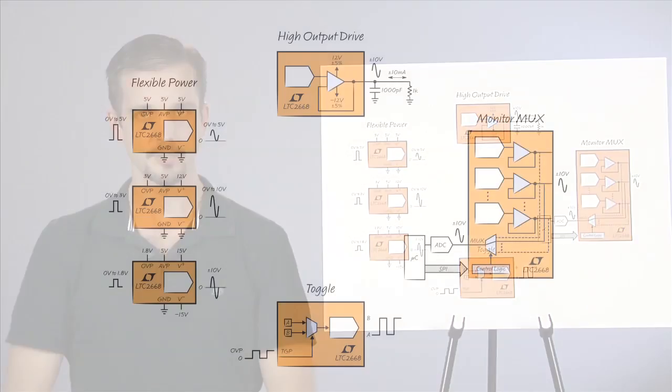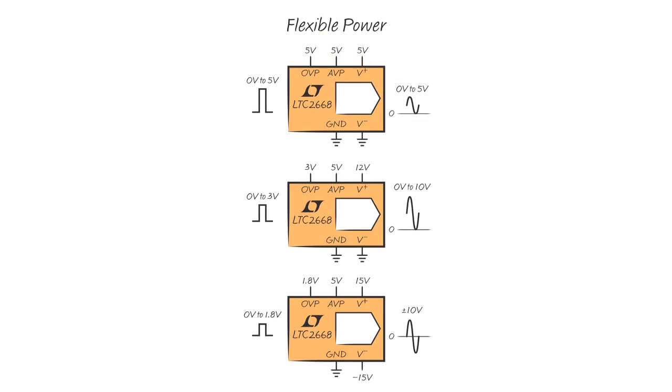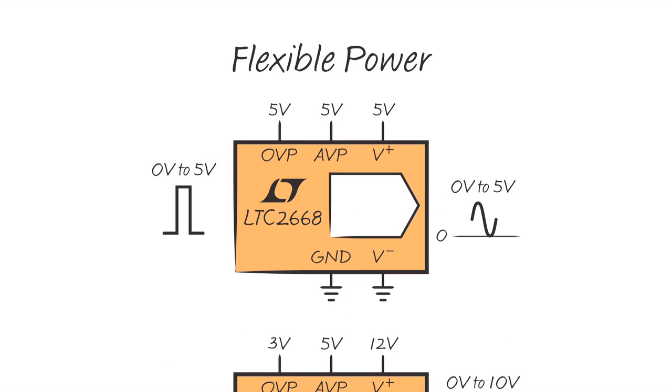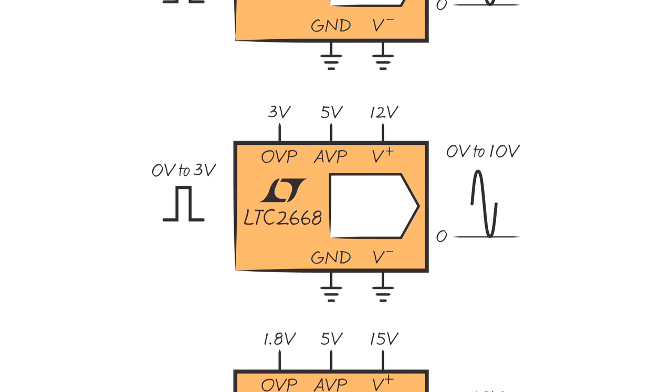The supply voltages are flexible. If all DACs are set to the unipolar 5V range, then only a single 5V supply is required. A single 12V supply will support the unipolar 5V and 10V spans, and a 15V bipolar supply allows the use of all output spans.